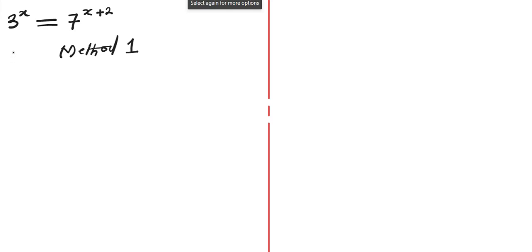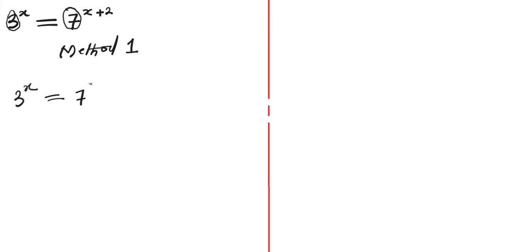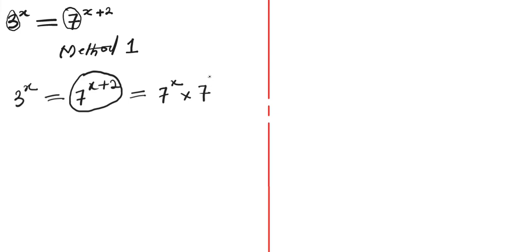Before I proceed to solve, take note of these bases. The base here is 3 and the base here is 7. So the bases are quite different, and we have 3 to the power of x equals 7 to the power of x plus 2. So 7 to the power of x plus 2 can be written as 7 to the power of x times 7 to the power of 2.